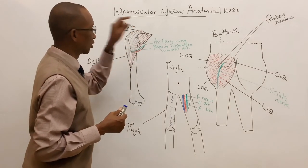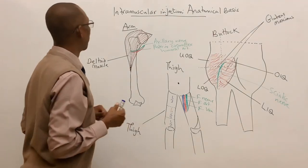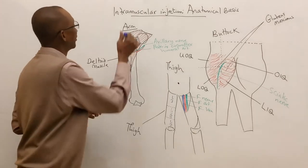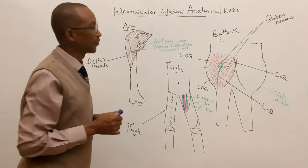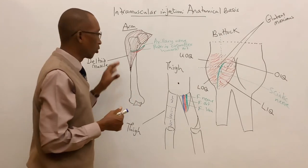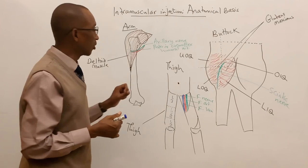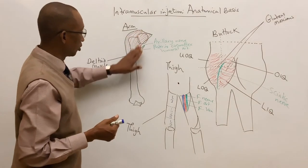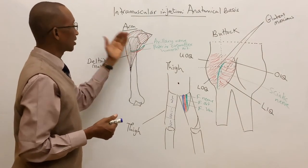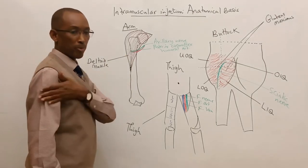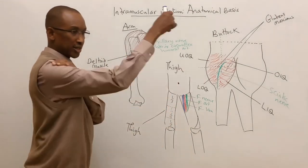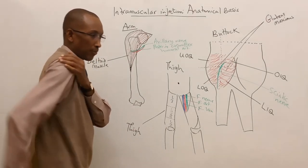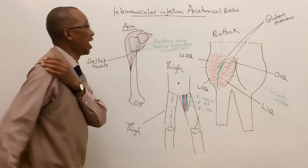These neurovascular bundles — the axillary nerve and the posterior circumflex humeral artery — are under cover of the deltoid muscle. The intramuscular injection in the arm is mainly given through the deltoid muscle, which has anterior, middle, and posterior groups of fibers performing flexion, abduction, and extension of the shoulder joint respectively.